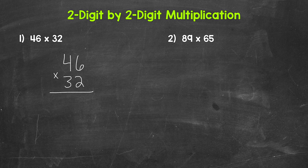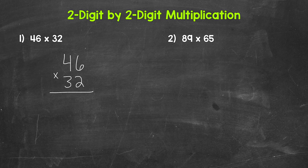Now, once we're lined up, we multiply. What we're going to be doing here is 46 times two, and then 46 times 30. I'm saying 30 since that three in 32 is in the tens place — it has a value of 30. So we'll start with 46 times two, then do 46 times 30, and then add those results to get our final answer.